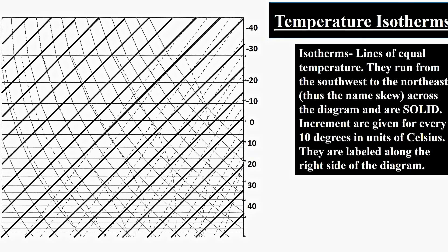Let's go through the different parts of a skew-t diagram. First, let's look at the temperature isotherms. In the image to the left, you can see lines that trend from the southwest corner of the image to the northeast corner. These are the temperature isotherms, highlighted in black.